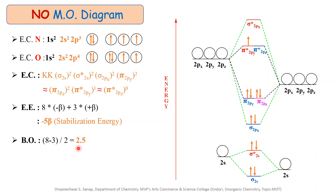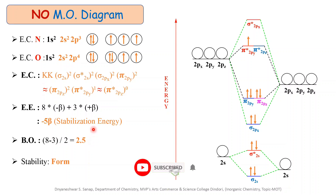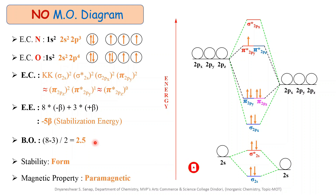That means there is formation of a 2.5 bond between nitrogen and oxygen in the nitric oxide molecule. On the basis of energy wall and bond order, we conclude that there is bond formation between nitrogen and oxygen and the formation of nitric oxide molecule is possible. The next important point is magnetic property: there is one unpaired electron in the π* anti-bonding molecular orbital, and therefore nitric oxide is paramagnetic in nature.